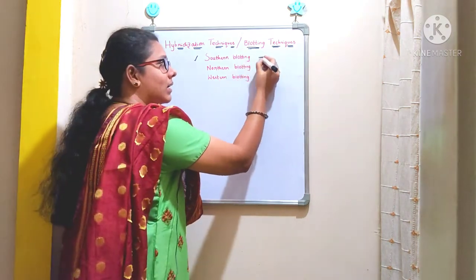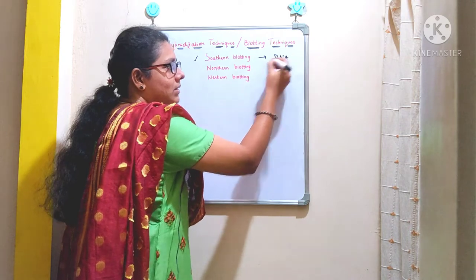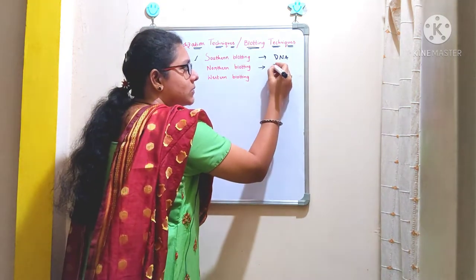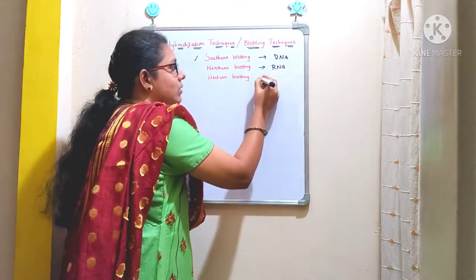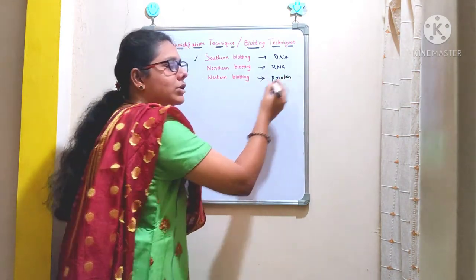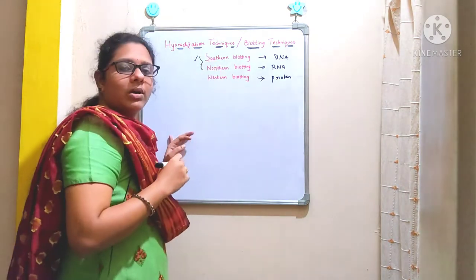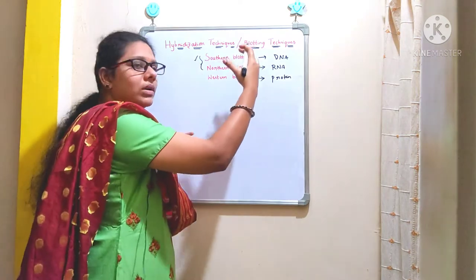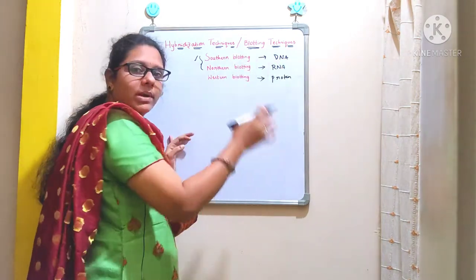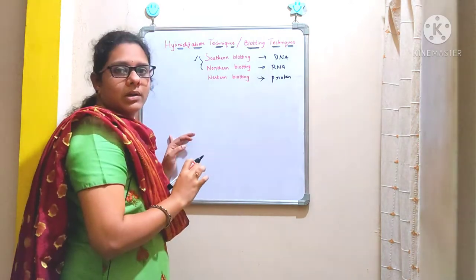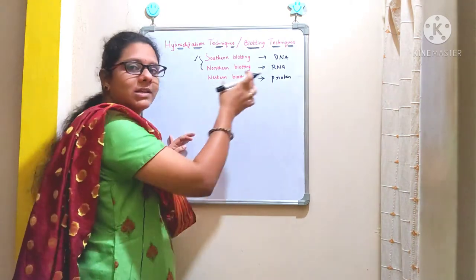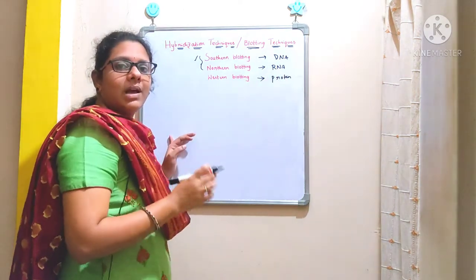In southern blotting we are going to identify DNA, whereas in northern blotting we identify the presence of a specific RNA sequence, and in western blotting we identify a specific protein from a mixture of proteins. Southern and northern blotting are quite similar — the difference is we identify a specific DNA sequence with southern blotting and an RNA sequence with northern blotting. In northern blotting we can study gene expression by finding the presence of RNA with the help of a probe.